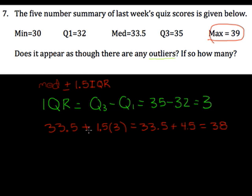So it appears as though we have an outlier too high, but we also need to check if it's too low. So we're going to take 33.5, subtract 1.5 times 3. That equals 33.5 minus 4.5, and we end up getting that would be about 29.